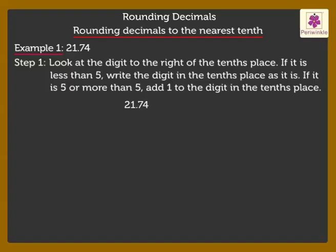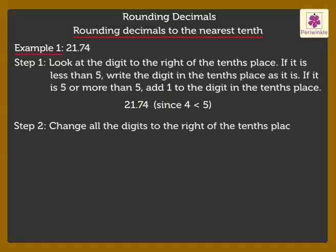Here, we have 4 to the right of the tenths place, which is less than 5. So, we keep the digit in the tenths place, 7, as it is. Step 2: Change all the digits to the right of the tenths place to 0. So, the rounded number is 21.70.